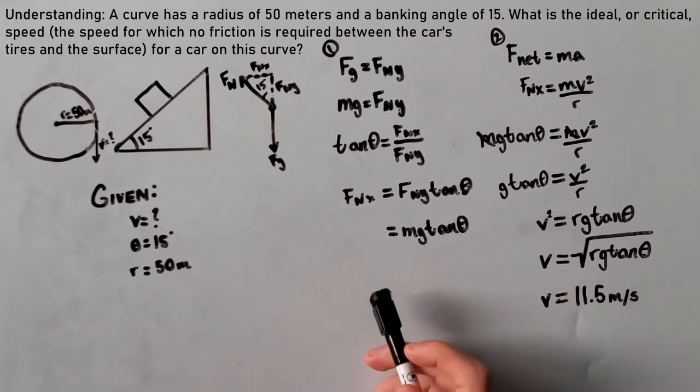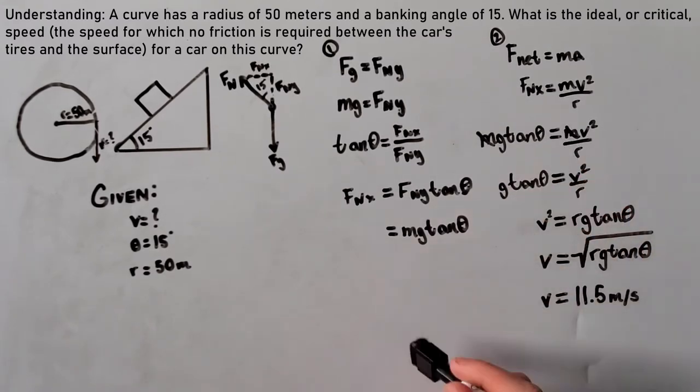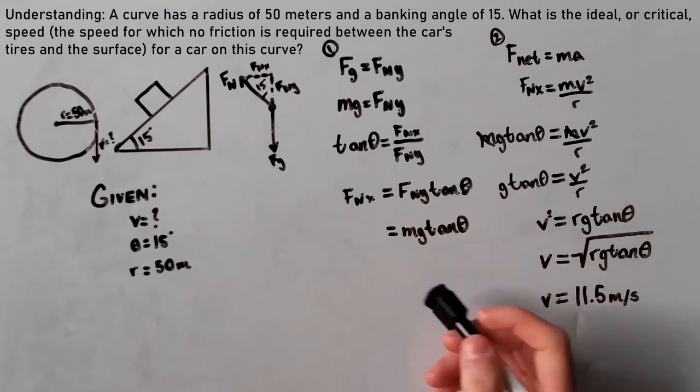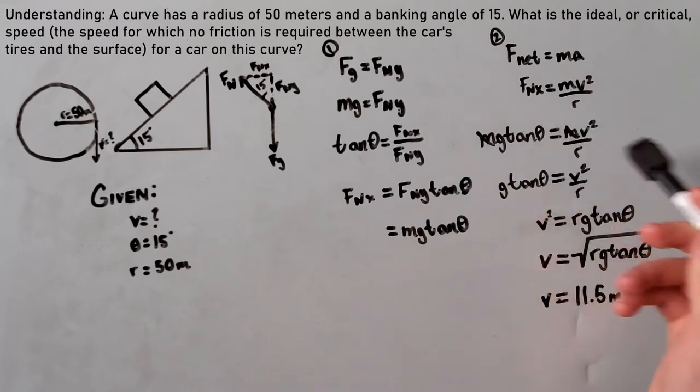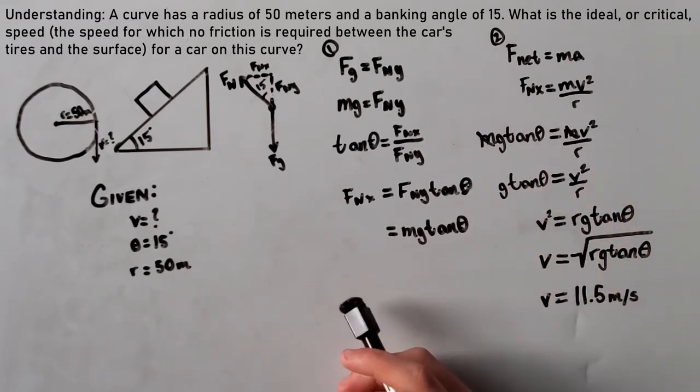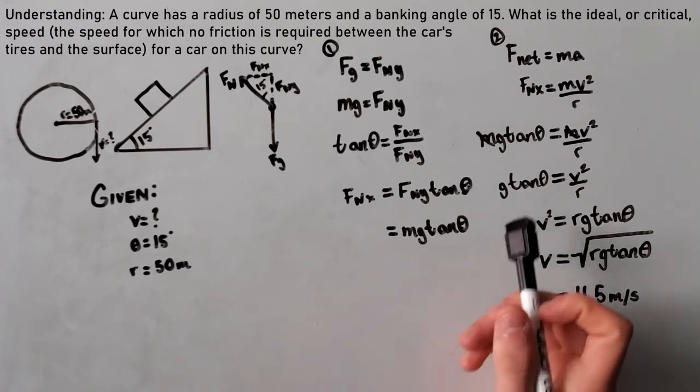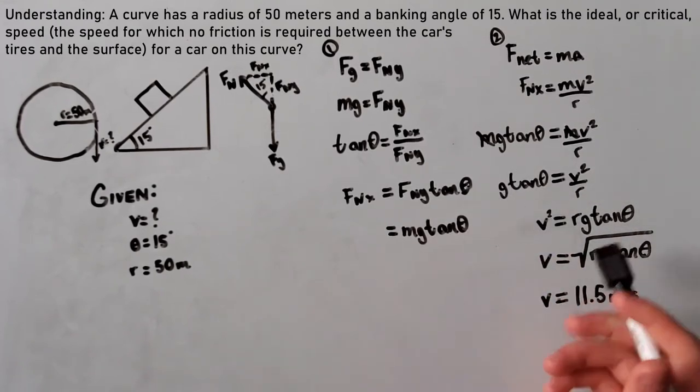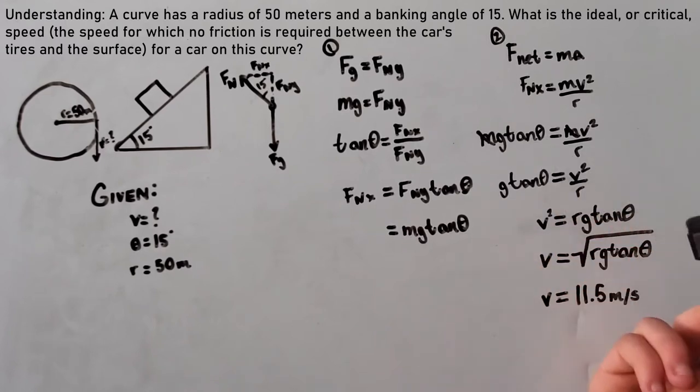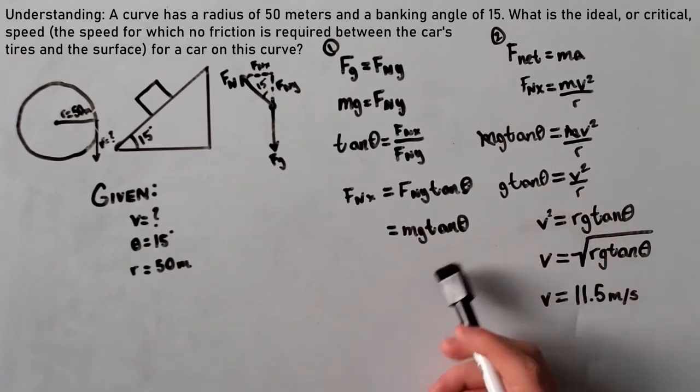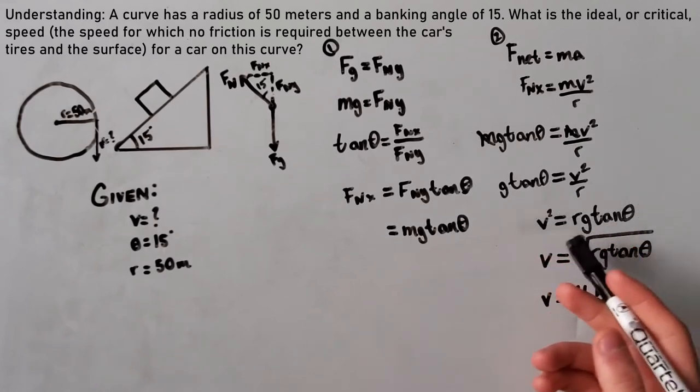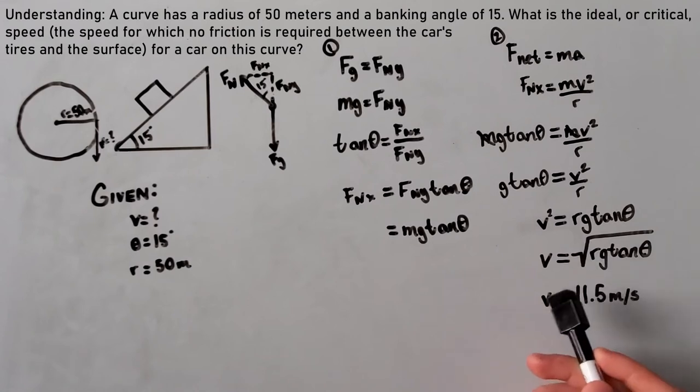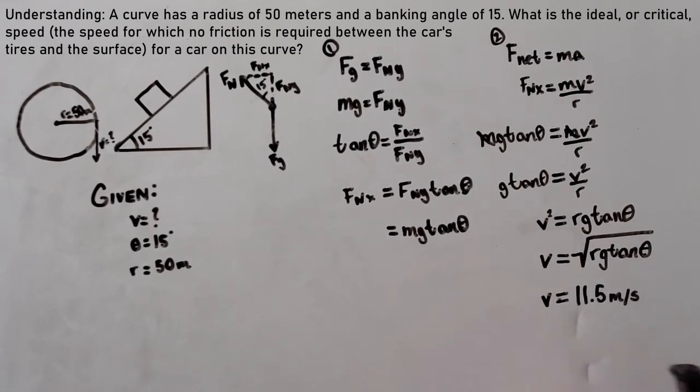Just like the previous question, we plug in F net equals Ma. fnx, which is our centripetal force towards the center, equals mv squared over r. That's the formula for the centripetal acceleration. Then, we have mg tan theta equals mv squared over r. Cancel out our masses because they're on either side. g tan theta equals v squared over r. Then we rearrange to isolate for v, and our final answer is 11.5 meters per second.